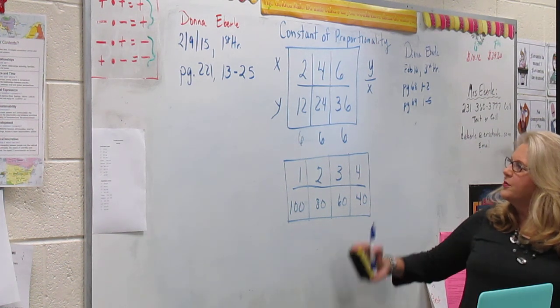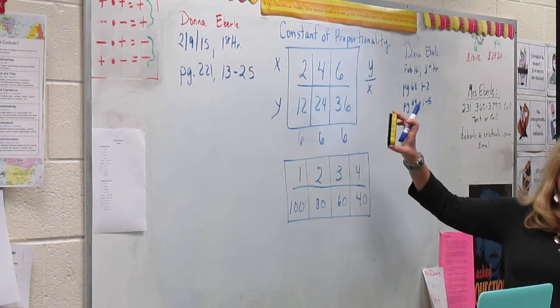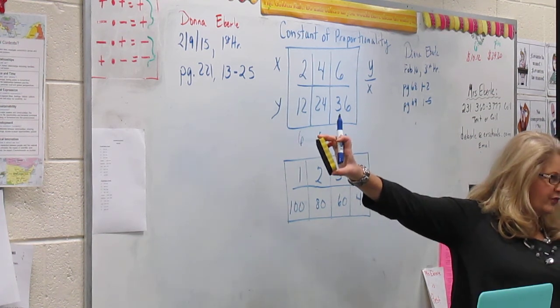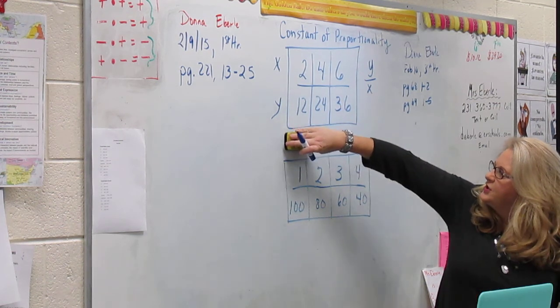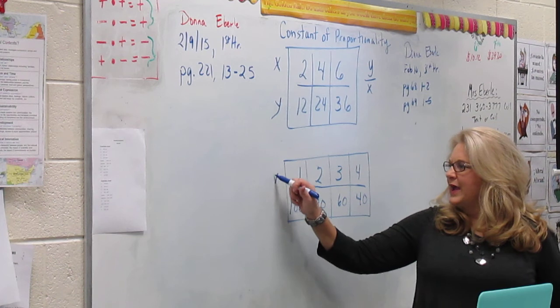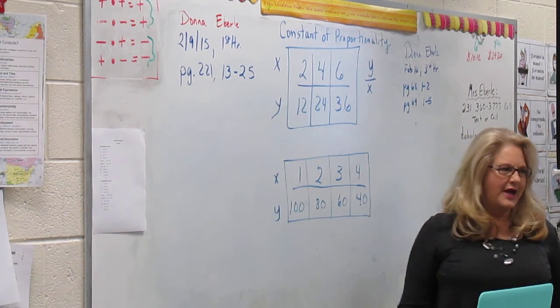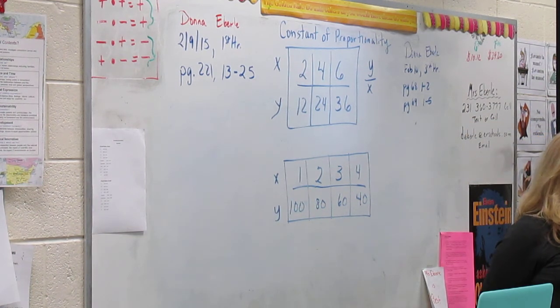But that formula, the way that we found that, doesn't always work for us. So in our books today for constant proportionality, they taught us to look for patterns. Again, we have a table that looks like this, X and Y. And I'm going to pause for a minute while you get that down.